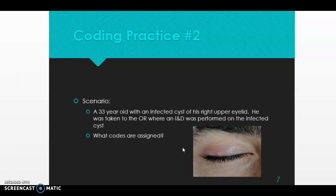Open to C in the alphabetical index, go to 'cyst,' then to 'eyelid' because that's where it was. Under eyelid, going to 'infected' as a subterm, it tells us to see 'hordeolum.' Because it was infected, we follow that cross-reference. In your index go to H and find 'hordeolum.' We need to identify the eyelid portion — ours is the right upper eyelid — so under hordeolum, go to 'right' then 'upper,' and you should see H00.011.